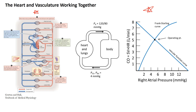The vascular function curve is a property of the systemic vasculature. The Frank-Starling curve is a property of the pump — in this view, the pump is both sides of the heart and the lungs combined. Where these curves meet is where the system is operating.